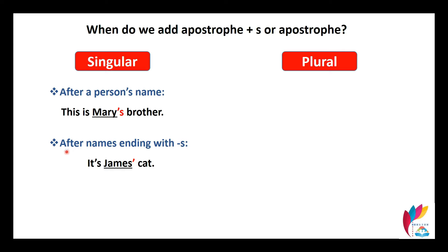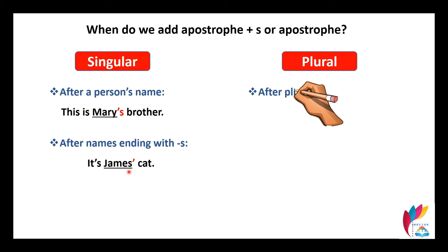But there are names that end with S, for example James — it ends with S. So we don't put apostrophe S; we only put the apostrophe, because the name already ends with an S.